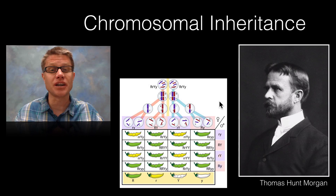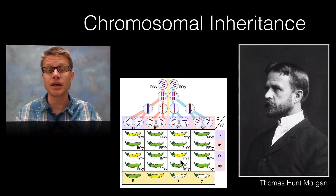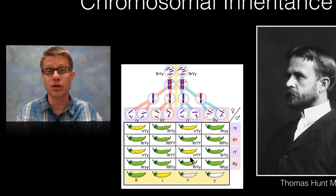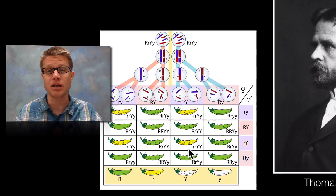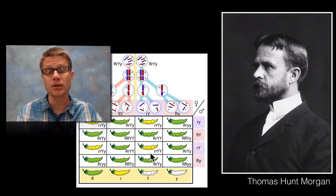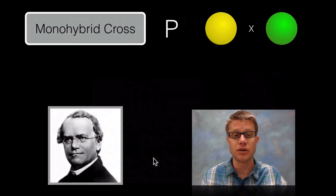Hi, it's Mr. Andersen and in this video I'm going to go through chromosomal inheritance. Most students understand Mendelian genetics and could do a simple Punnett square. But in this video we're going to dig more deeply and see that those genes are actually carried on chromosomes and packaged into gametes. This is built on the work of Thomas Hunt Morgan. We're going to go through a monohybrid and a dihybrid cross — not only the Punnett square, but let's dig into how the chromosomes are actually delivering those genes.